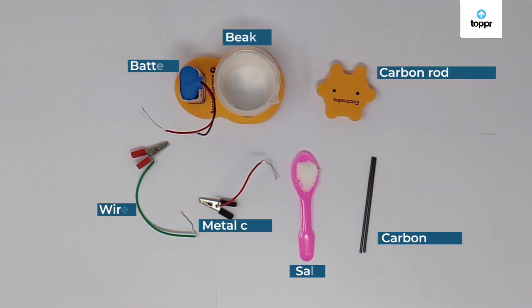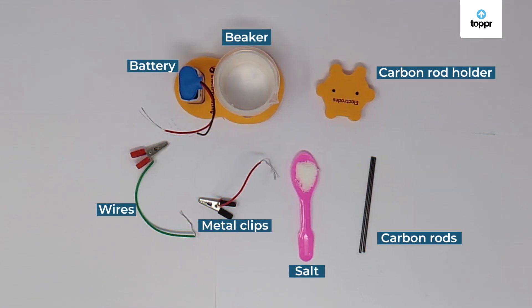In order to test the occurrence of a chemical reaction, let's perform an experiment. These are the components that we need for our experiment.